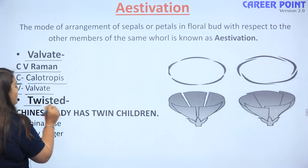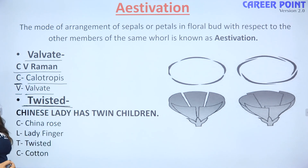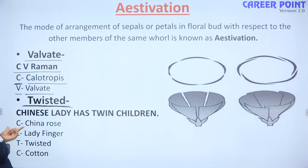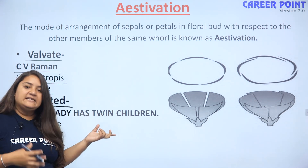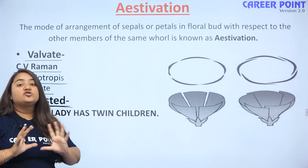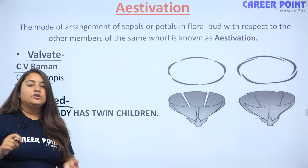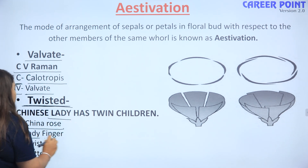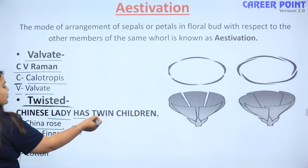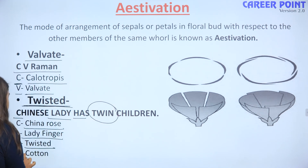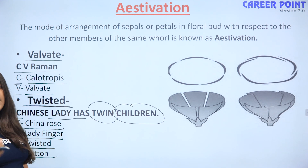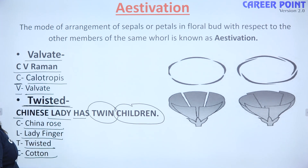Next type of estivation hai twisted. Twisted type of estivation ko hum kaise yaad rakhenge? Uska mnemonic kya hai? 'Chinese lady has twin children.' C se China rose, L se lady finger, twin se twisted, and C se cotton. Aap iske examples yaad rakh sakte hain.